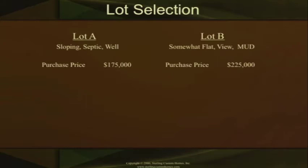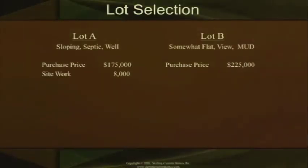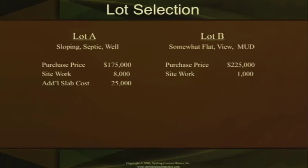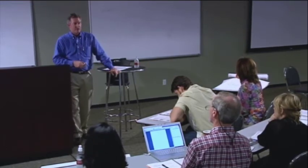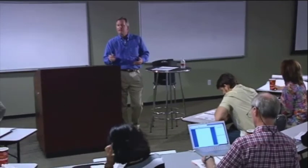Lot B is actually the lot we want, but it's $50,000 more. Let's go through an exercise of how what we talked about equates to this. Lot A has site work — cuts and retaining walls because it's a sloping lot — so there's $8,000 associated with that. The site work on lot B is $1,000 because it's somewhat flat. Lot A also has additional slab cost because it's sloping. Lot B is on a somewhat flat lot, so in Austin, Texas, that's three to four feet — normal for us — so we call that zero. There's no additional slab cost; we're talking about additional money due to the lot criteria.